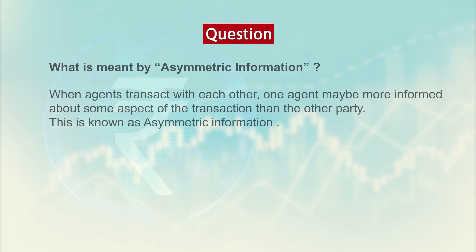We open up with the first question: what is meant by asymmetric information? When agents transact with each other, one agent may be more informed about some aspect of the transaction than the other party, and this is called asymmetric information. It is said that one of the agents among the two parties is having more knowledge, which makes the imperfection continue and creates distortions in the market structure.